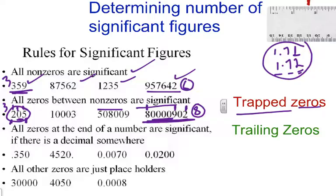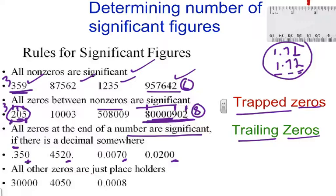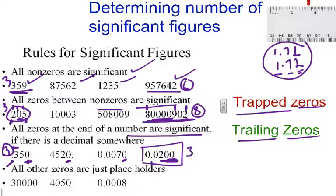All zeros at the end of a number are significant if — very important — there is a decimal somewhere in the number. We call those trailing zeros. This trailing zero is significant because there's a decimal right here, so this first number has three significant digits. These two zeros right here are trailing zeros, and there's a decimal, so those two zeros are significant, the 2 is also significant — so this number in the back has three significant digits.